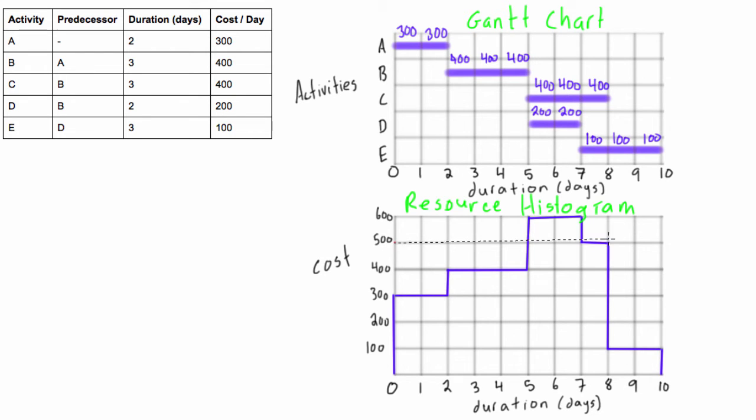So you'll come in here and you'll draw just a line across your resource histogram at $500. So this is constraining us, we cannot spend more than $500 a day, so we are going to have to fix something with these two days here, day six and day seven. And you can see that it's obviously because we're adding $400 and $200.